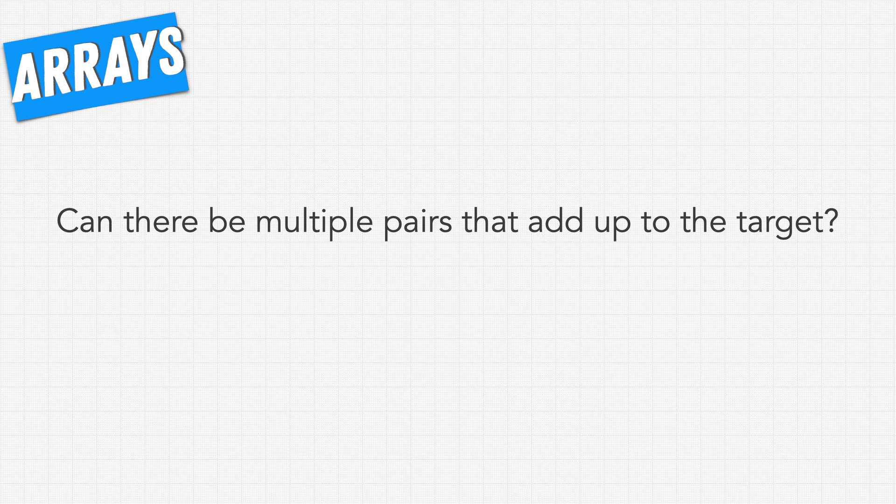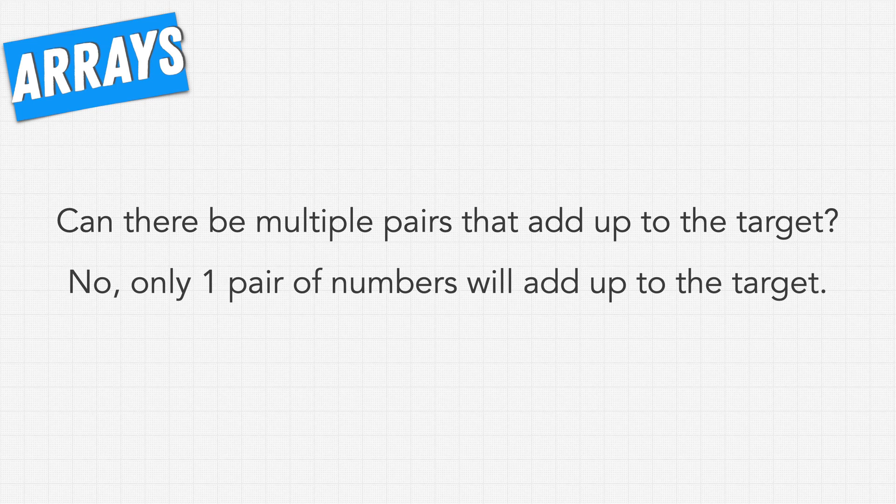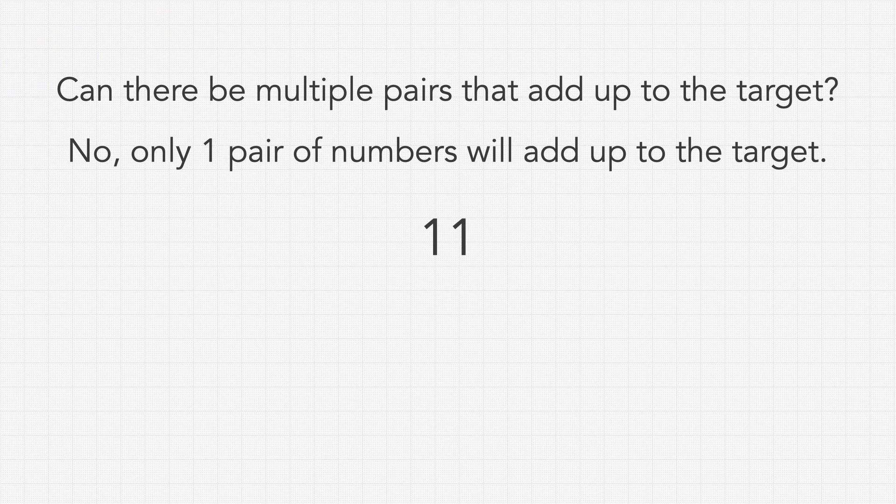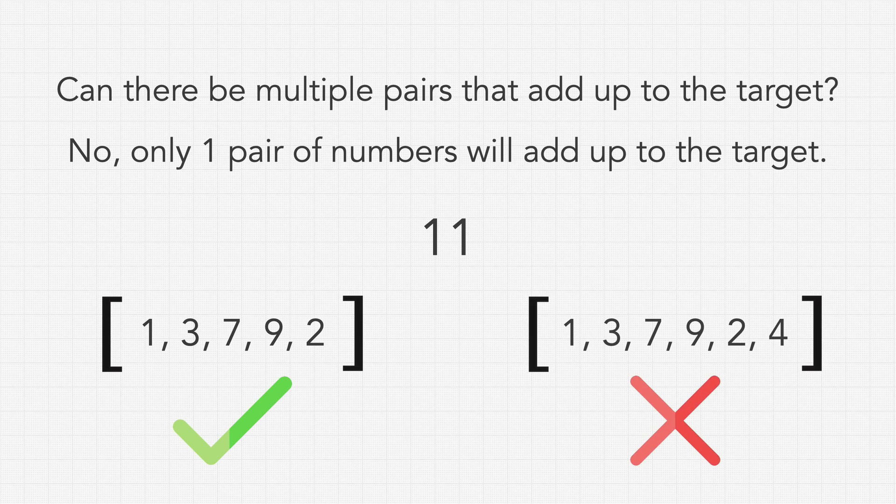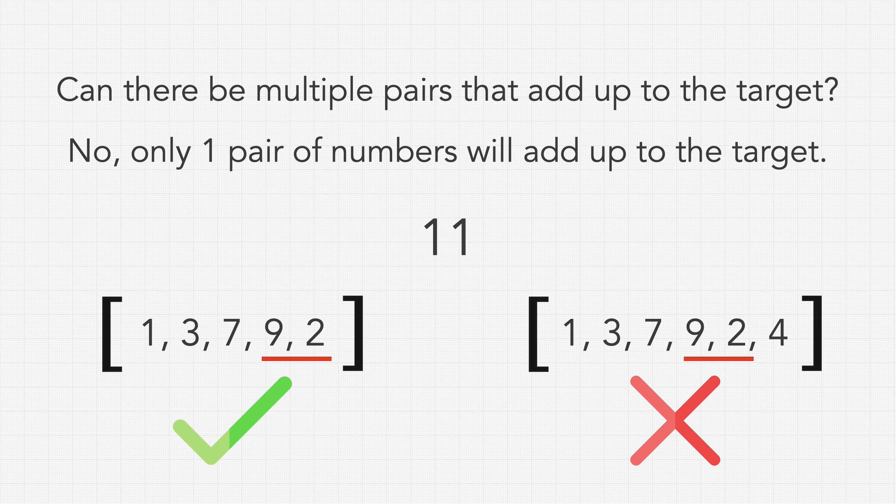Another question we can ask is can there be multiple pairs that add up to the target? And in this case they might say no. Only one pair of numbers will add up to the target. So what this means is that let's say we're given a target of 11. We can be given an array where there's only one answer in it, whereas in this other array there are more than one. And we can see that very clearly. In this first array the 9 and the 2 are the only pair that add up to 11. Whereas in the second array we have the 9 and the 2 but we also have the 7 and the 4. So we can expect that in any given array and in any given target there will only be one pair of numbers that will add up to that target.